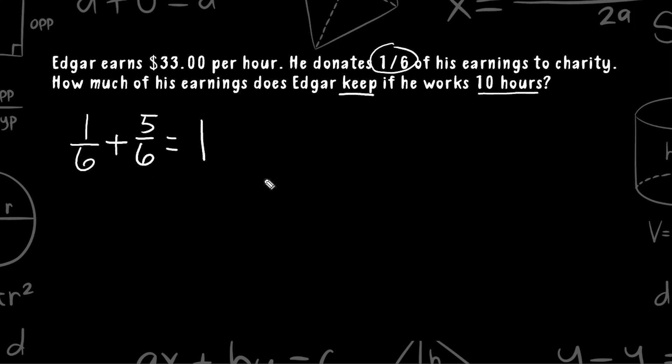Because Edgar gets to keep 5 sixths of his entire earnings, we're just going to write that as an expression. So what we're going to do is we're going to take 5 sixths and we're going to multiply that by his entire earnings, which is calculated by 33 times 10.